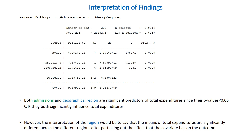One may say that they both significantly influence total expenditures. However, the interpretation of the region would be to say that the means of total expenditures are significantly different across the different regions, after partialing out the effect that the covariate has on the outcome.